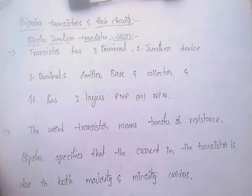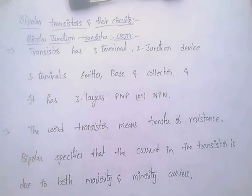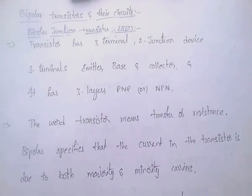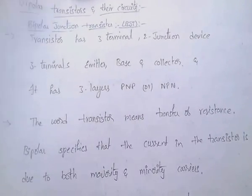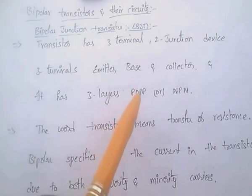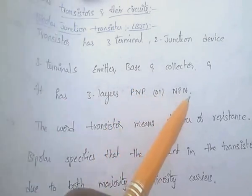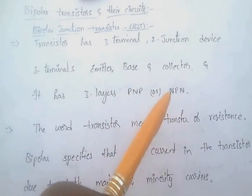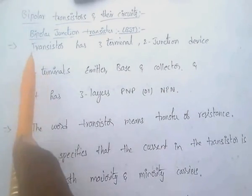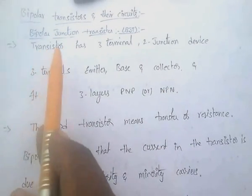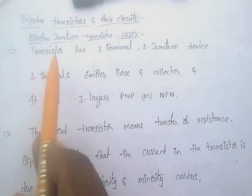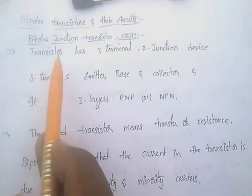The three terminals are emitter, base, and collector. It has three layers: P, N, P or N, P, N. The word transistor means transfer of resistance.